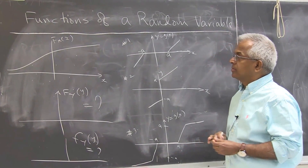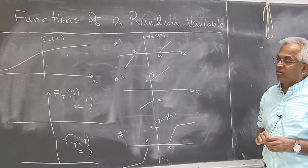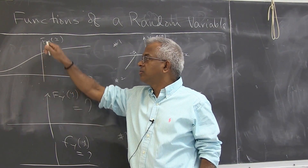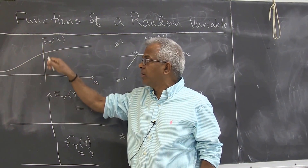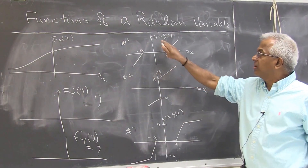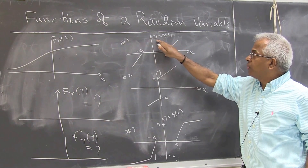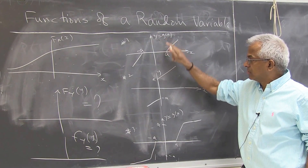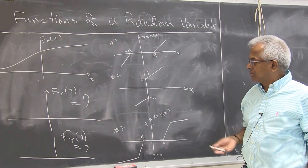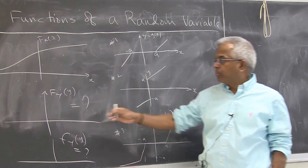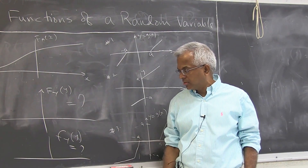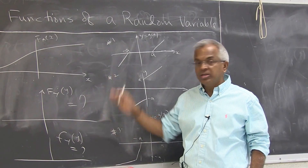Let's look at functions of one random variable. The basic problem is: you're given a distribution function of a random variable X, and we have three examples with a function of that random variable. Y = g(X) is the function, and these are nonlinear functions. The problem is to find the distribution function or the density function of Y for each of these problems.